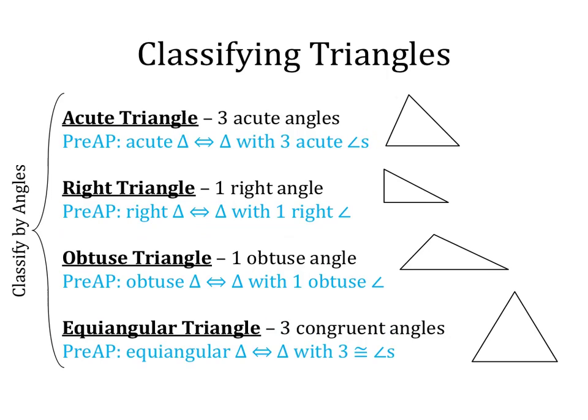Next, we are going to classify based on angles. First, we have acute triangles. Acute triangles have three acute angles. We don't know anything about their relation to each other — some could be congruent and some not — but they are all acute angles, so they are all between 0 and 90 degrees.